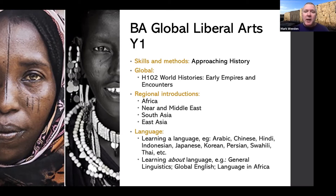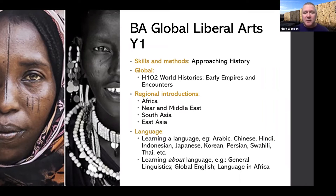Approaching History trains you in how to deal critically with sources — it's not just for historians. We have a global track, from which I'll play a quick extract, called World Histories: Early Empires and Encounters, which gives you a global framework for your studies. Then you have regional introductions from various areas covered by SOAS, and there's the language track. We encourage you to learn a language, especially in the first year, because your marks don't count towards the end result of your degree. If you feel uncertain, there are also options for learning about language.